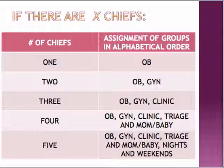Depending on how many chiefs there are, these are going to be your assignments. If alphabetically you're first, you're going to do OB. If there are two groups, group one does OB and group two does GYN. With three groups: OB, GYN, clinic — and so on, as you can see here. I don't think there's going to be five residents because someone has to be on labor and delivery.